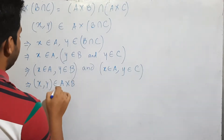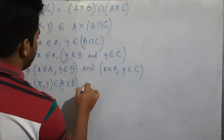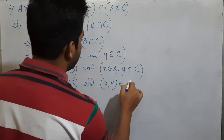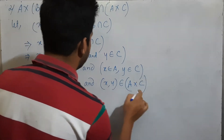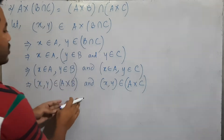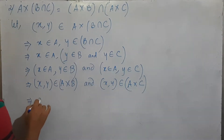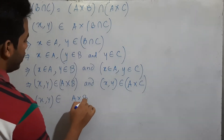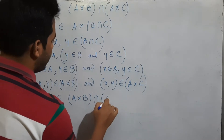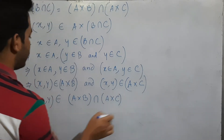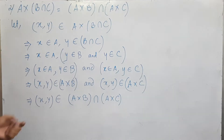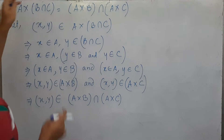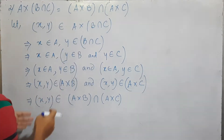X, Y belongs to A cross B. X, Y to A cross C. A cross C — so X, Y belongs to A cross B and to A cross C. That means X, Y is an element of A cross C.